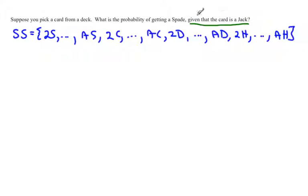Because we are given that the card is a jack, we can restrict this sample space down to that knowledge. We don't need the twos, threes, fours, all the way through to the aces except for the jacks. So the restricted sample space would be the jack of spades, jack of clubs, jack of diamonds, and jack of hearts.